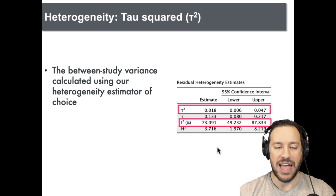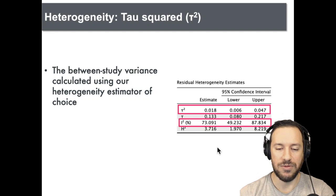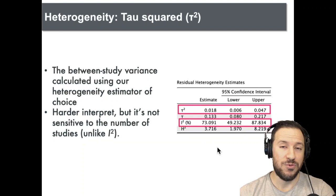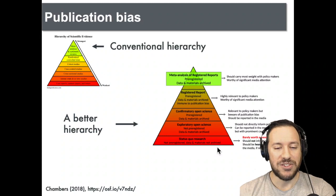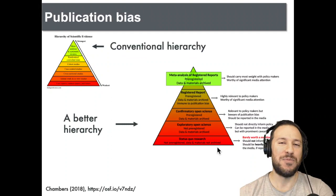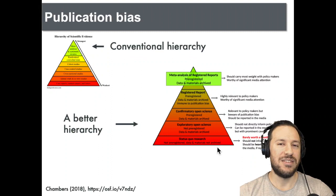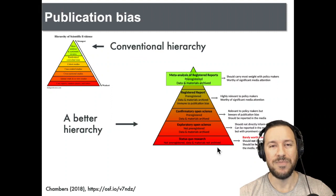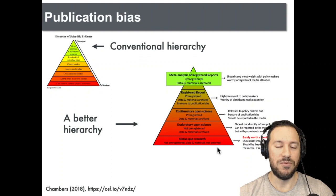Another commonly used measure of heterogeneity is tau-squared, which looks at between-study variance using your heterogeneity estimator of choice. It's harder to interpret but it's not as sensitive to the number of studies as I-squared. My recommendation — and others' — is to report both tau-squared and I-squared. Coming back to publication bias: even if meta-analysis is at the top of the evidence pyramid, if it draws from a research field with publication bias, it won't accurately represent the true summary effect size, because non-significant studies haven't been reported and significant studies have inflated effect sizes.